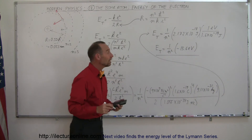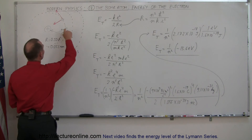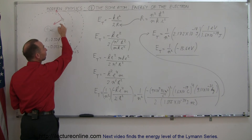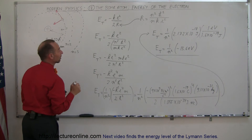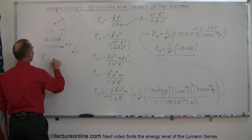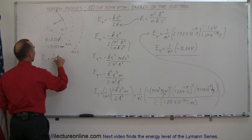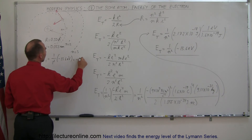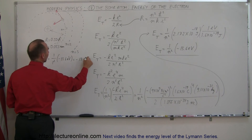What that means is the energy level for the electron at the innermost orbit is equal to minus 13.6 electron volts. So E1 is equal to one over one squared times minus 13.6 electron volts, which is of course minus 13.6 electron volts.